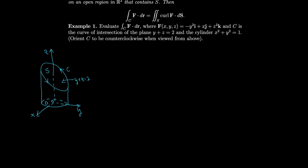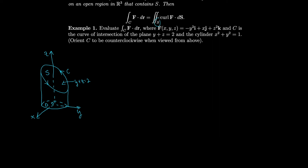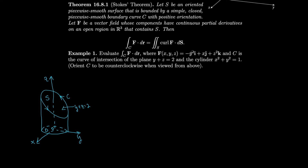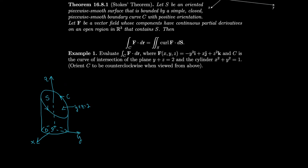By Stokes' Theorem, the line integral over C equals the surface integral of curl F·dS over any oriented piecewise smooth surface S bounded by C. So we might as well make S as simple as possible — we'll take it to be the flat interior of the slice, where Z is a function of X and Y. Then we can express the surface integral as a double integral over the disk D.